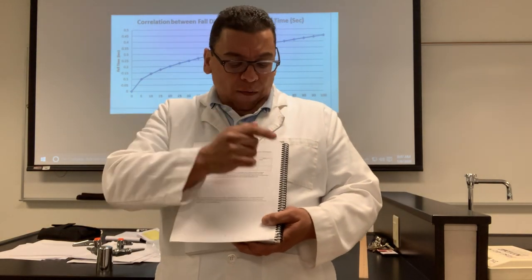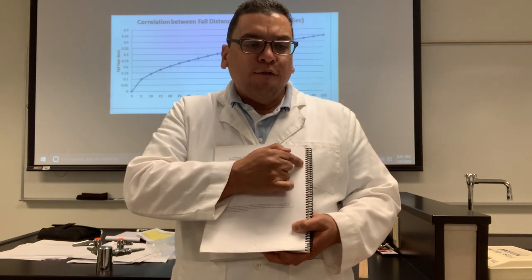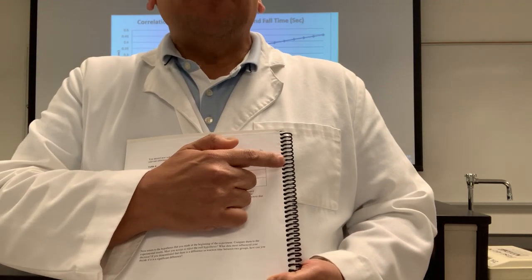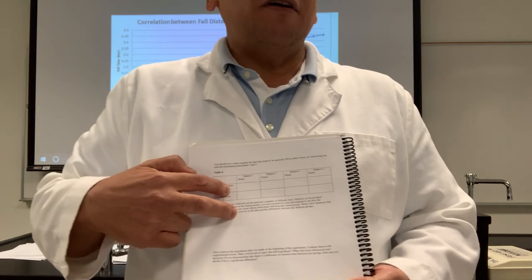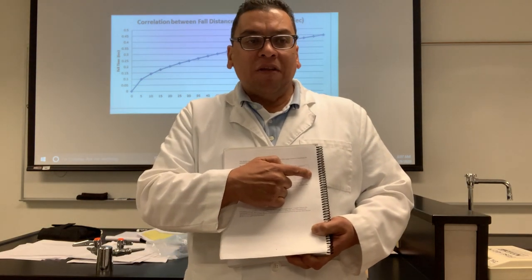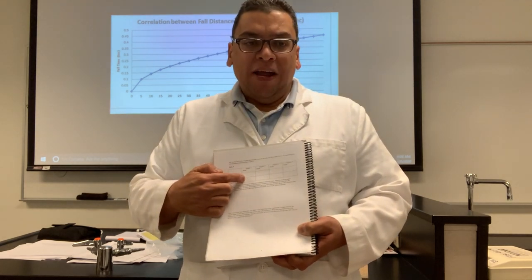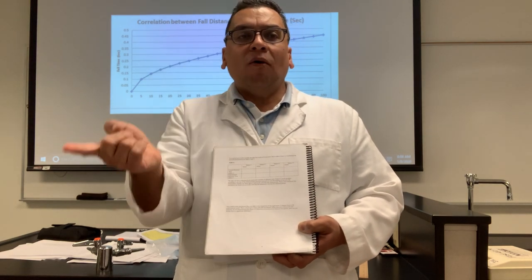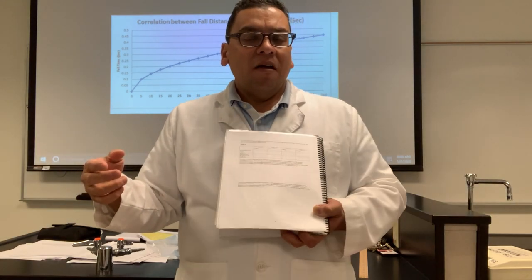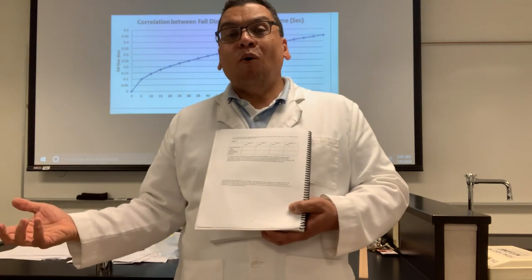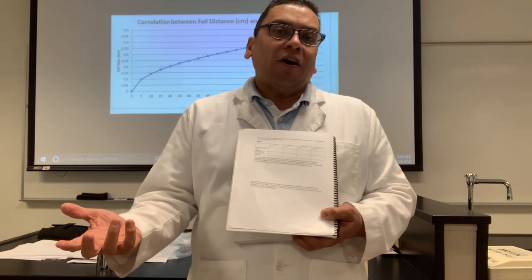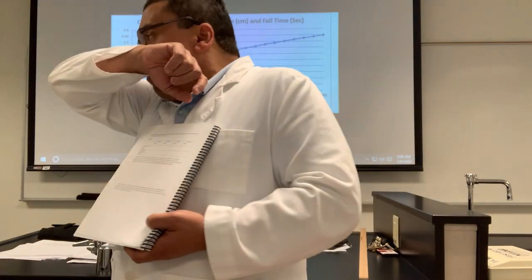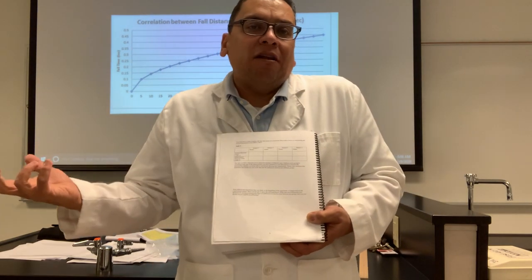I want you to create another column at the end of Table Four for the averages of those data values. You're going to average the reaction time with your dominant hand and the reaction time with your non-dominant hand. These are the two numbers you will finally compare. If they're both 0.2 seconds, there's no effect. If your dominant hand is 0.2 seconds and your non-dominant hand is 0.9 seconds, then your dominant hand is quicker.